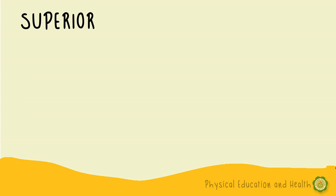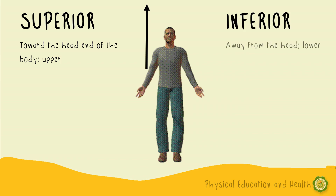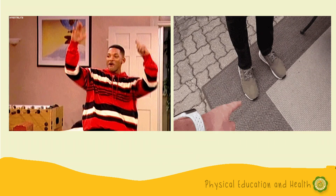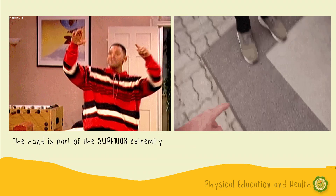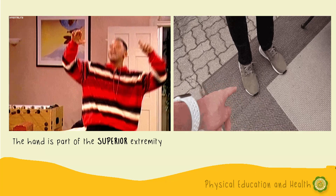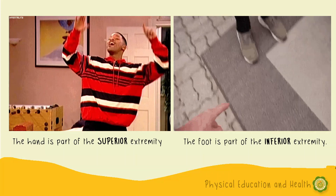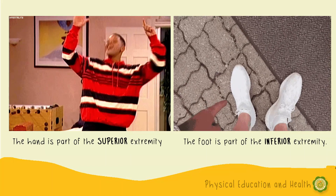Next is superior — toward the head end of the body. Ibig sabihin, lahat ng paytaas sa ating ulo. Next, inferior — away from the head, or towards the feet. For example, the hand is part of the superior extremity because we can extend our hands above our head. Next, the foot is part of the inferior extremity.